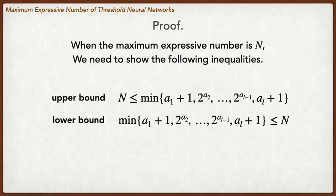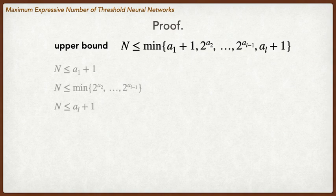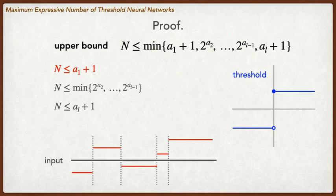We show the value is the upper bound and lower bound of the expressive number. If the maximum expressive number is large N, we show N is the upper bound first. To prove the upper bound, we show three inequalities. The first inequality is shown by a property of the threshold function. We have already shown the independence of expressive numbers from input dimension, so we only assume single input dimension. A threshold function divides inputs into two areas, so A1 threshold functions can only divide inputs into A1 plus 1 areas. Therefore, we have the first inequality.